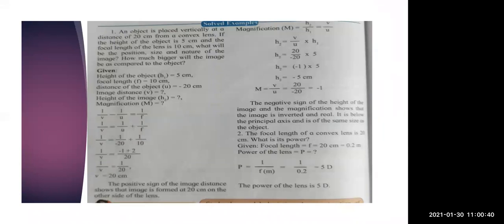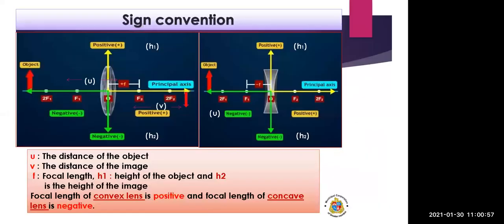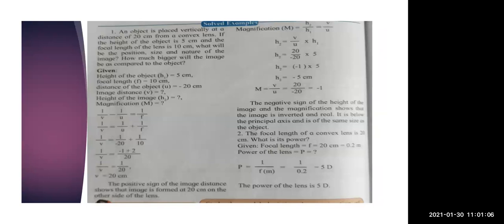Here is an example problem. An object is placed vertically at a distance of 20 centimeters from a convex lens. The object distance U equals minus 20 centimeters. The height of the object H1 is 5 centimeters. The focal length F is 10 centimeters — and since it is a convex lens, the focal length is positive. We need to find the position, size, and nature of the image.